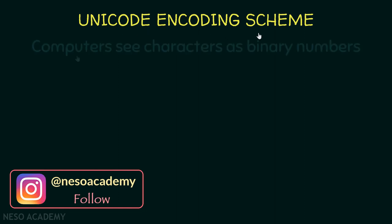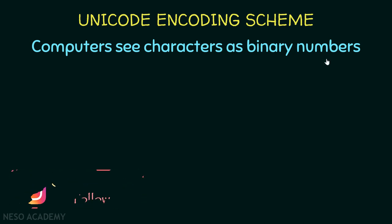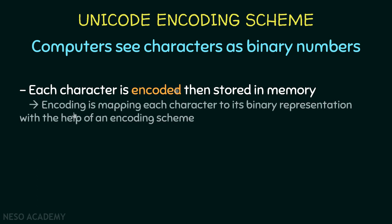First of all, I want you to understand that computers see characters as binary numbers. All the data stored inside the computer is stored using machine language, which is binary. Even characters and strings — everything is stored in binary format. So we say that each character is encoded and then stored in memory. Encoding is mapping each character to its binary representation, and this is done with the help of an encoding scheme.